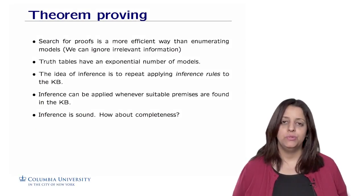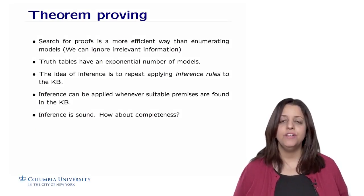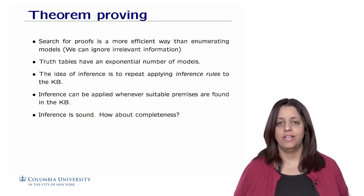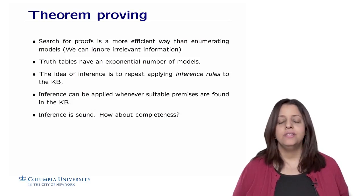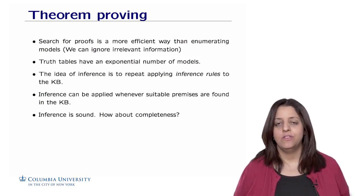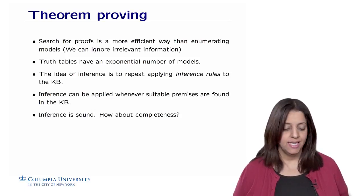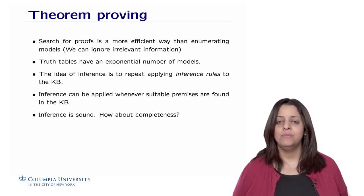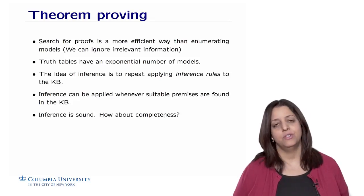It turned out that searching for proof using search algorithms is more efficient than doing model checking by iterating all possible truth values for the propositions. The main reason is that truth tables are exponential in the number of propositions, and furthermore, when we do inference, we can simply ignore irrelevant information.